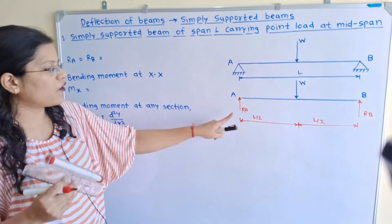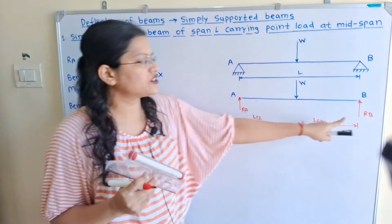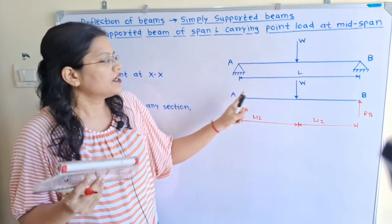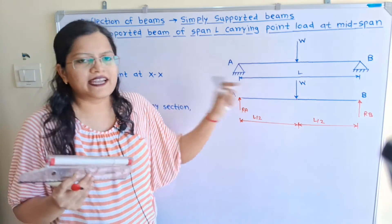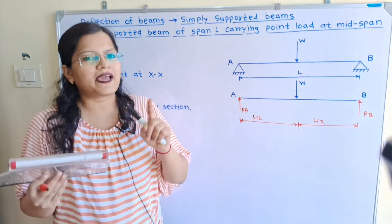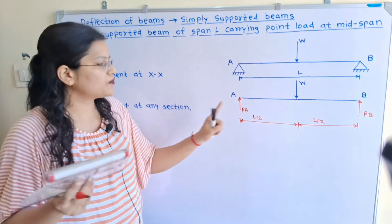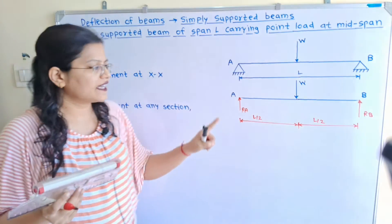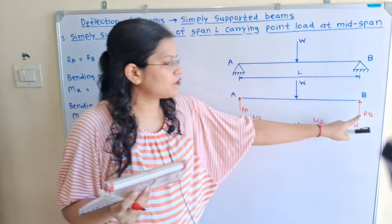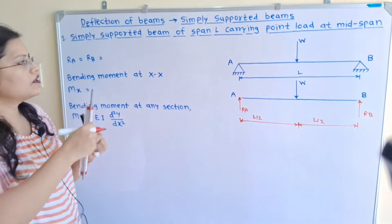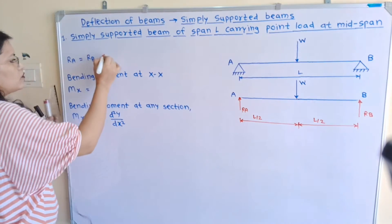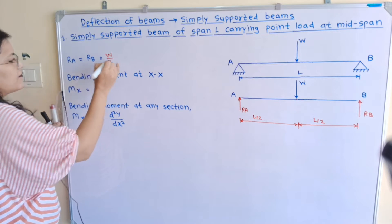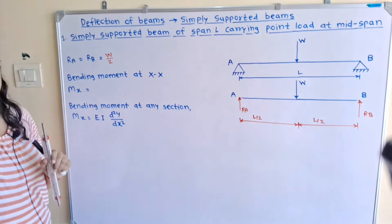To find out reactions RA and RB: when the load W is at mid span, it is equally distributed at both supports. So we can say that RA = RB = W/2.